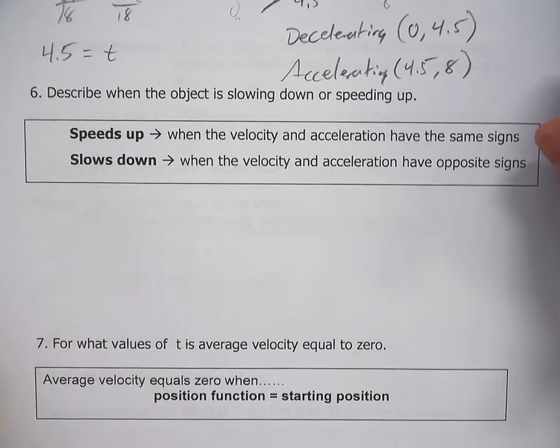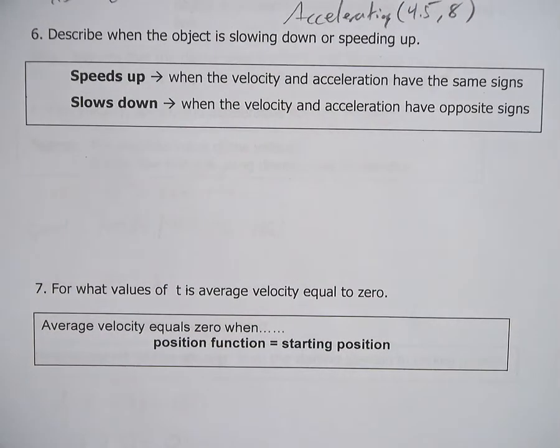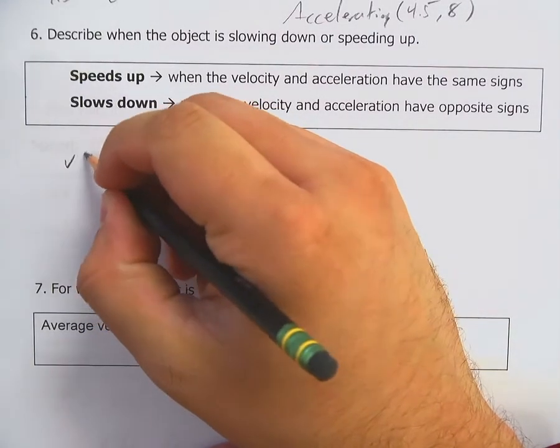Number six. Describe when the object is slowing down or speeding up. Now this is interesting. Speeds up when the velocity and acceleration have the same signs, and it slows down when velocity and acceleration have opposite signs. Good thing we've already done a sign analysis. Let's bring those guys over.